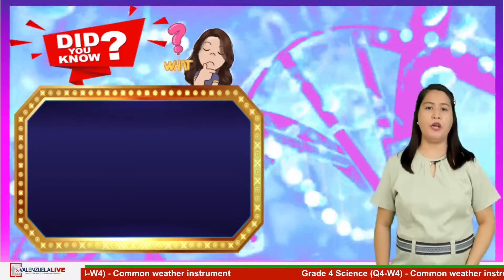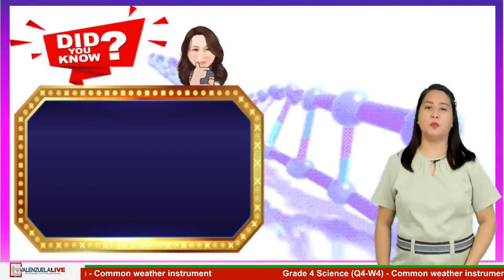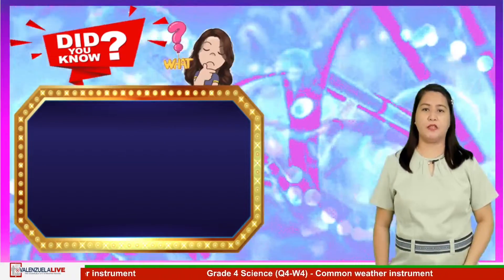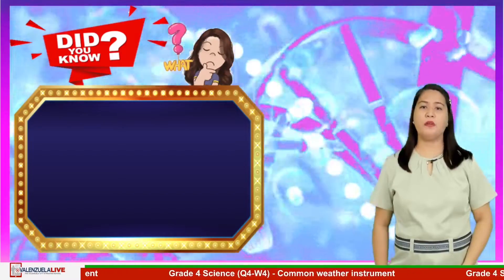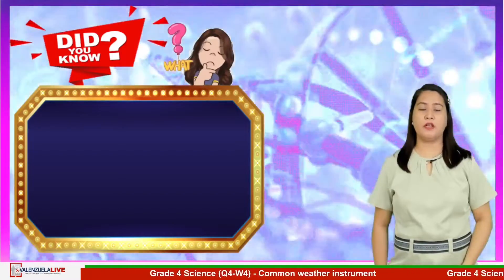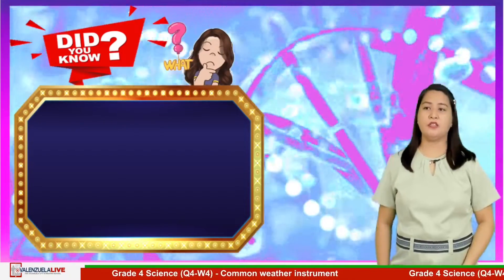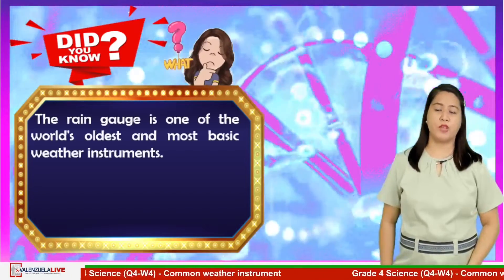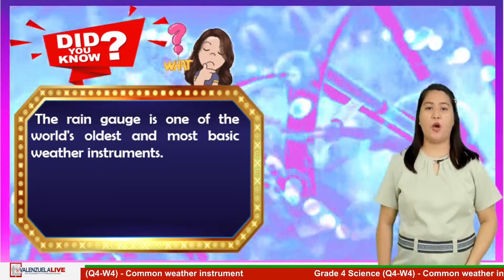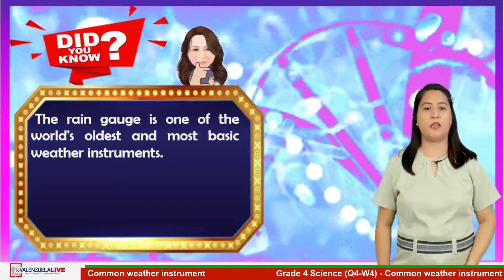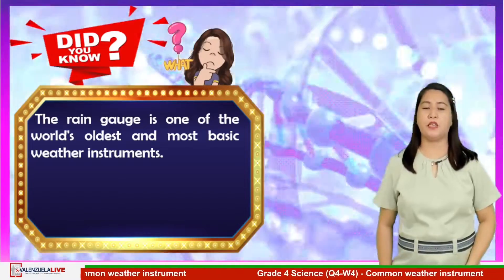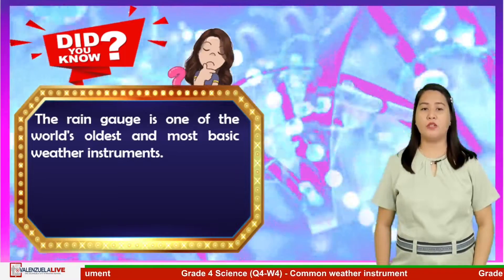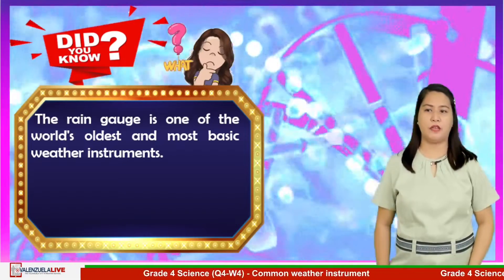Always remember, the water cycle is an extremely important process. This time, let's explore about the weather and start with a trivia. Did you know that the rain gauge is one of the world's oldest and most basic instruments? Some sources state that the world's oldest rain gauge is found in Korea.